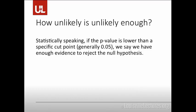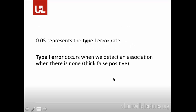Going back to the threshold: if your p-value is less than 0.05, you have enough evidence to reject the null hypothesis. That 0.05 is your type 1 error rate — the probability that you would detect an association when there is none. Think of it like a false positive test for some sort of disease or condition. What that means is that for every study that has significant results, there's about a 1 in 20 chance that they detected an association that wasn't there, because 0.05 is almost universally accepted as that cutoff.